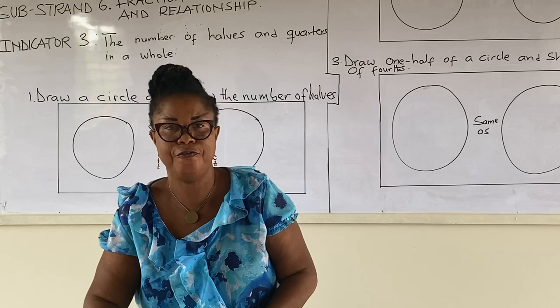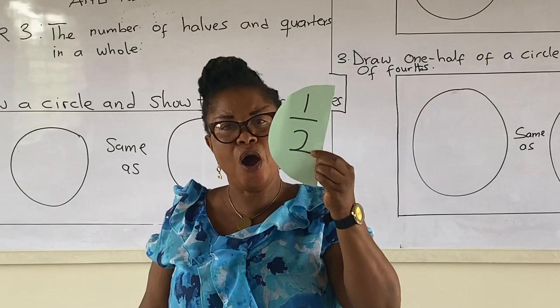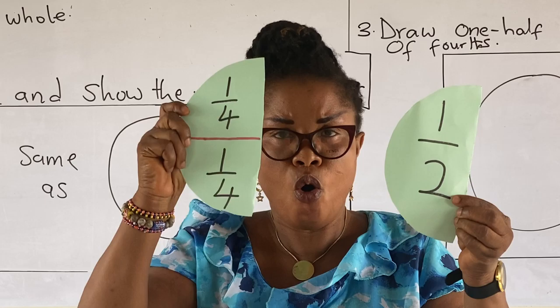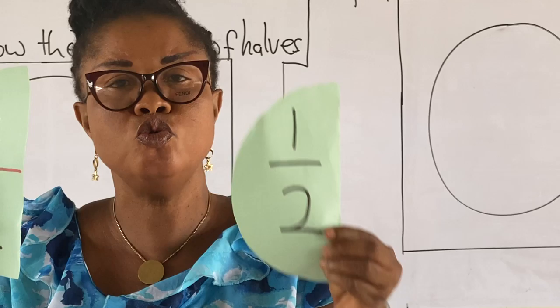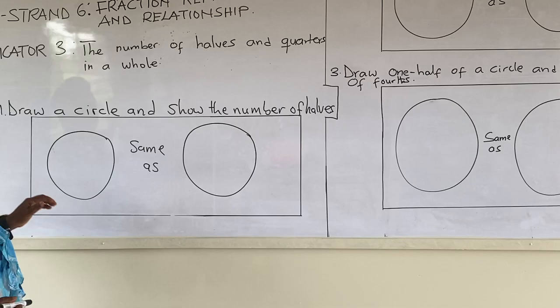Now, let's take a half — a half of a whole. When a half of a whole is equally divided into two, we have two quarters. One quarter and another quarter equals to a half.